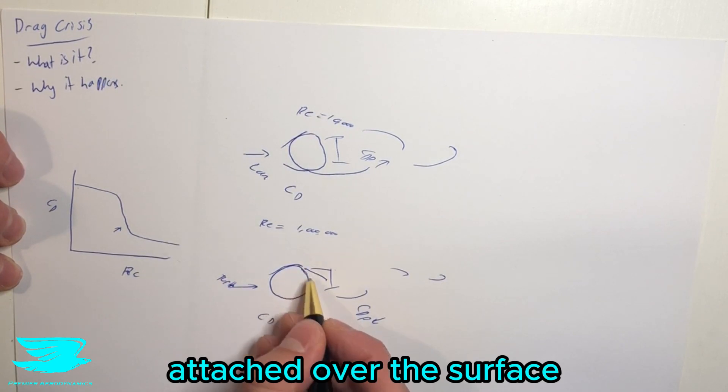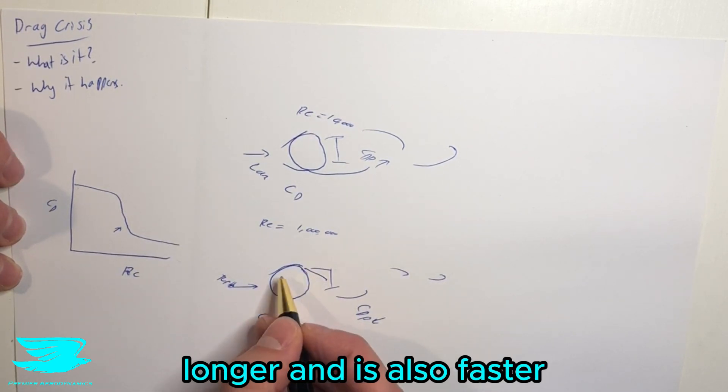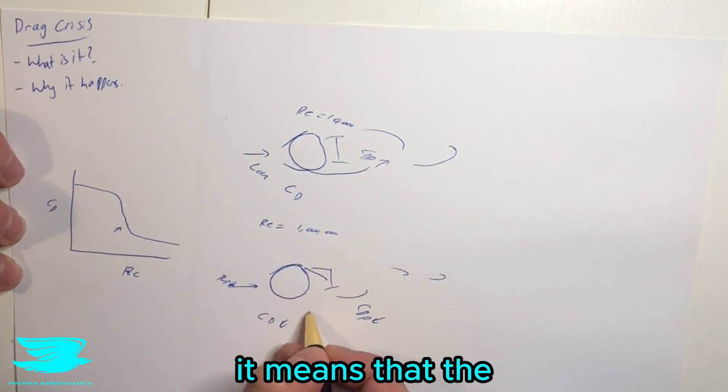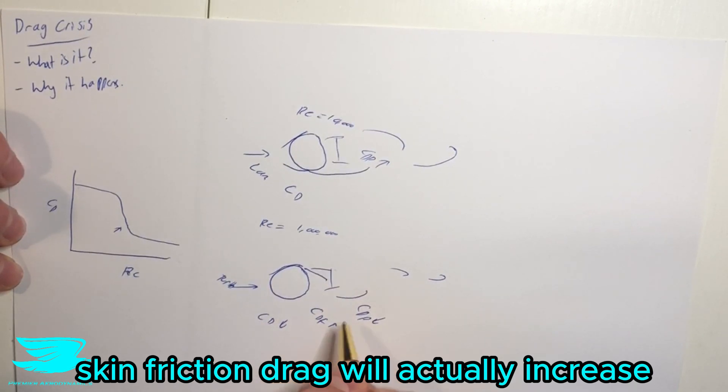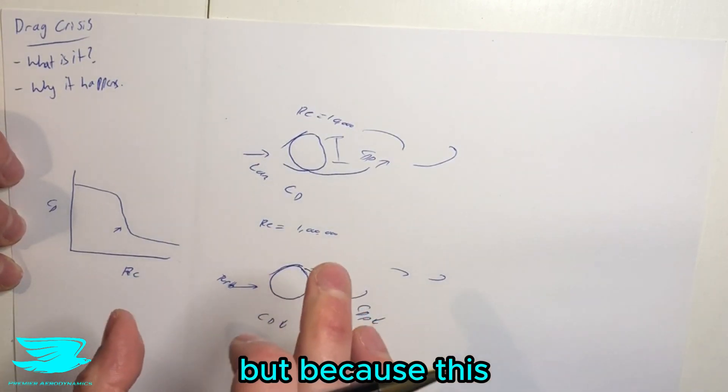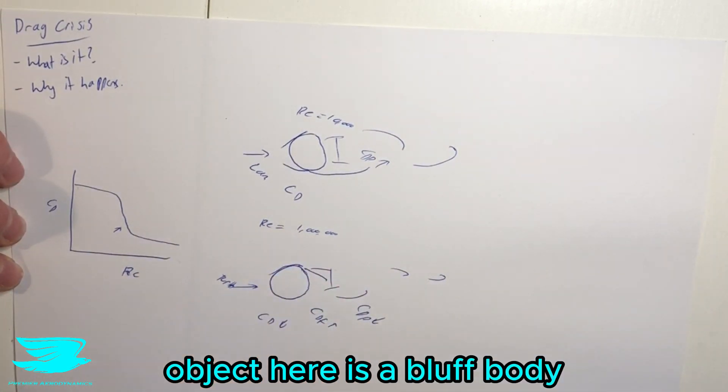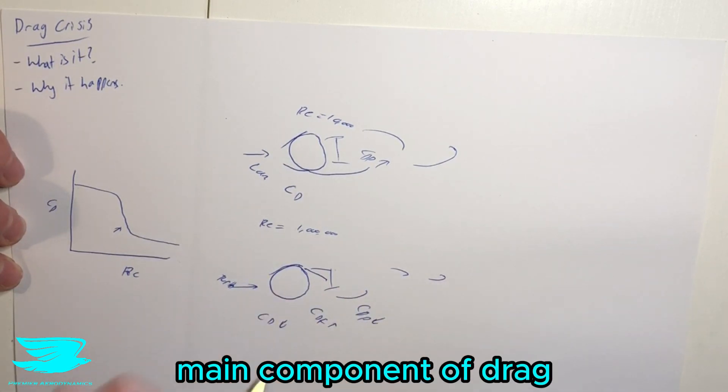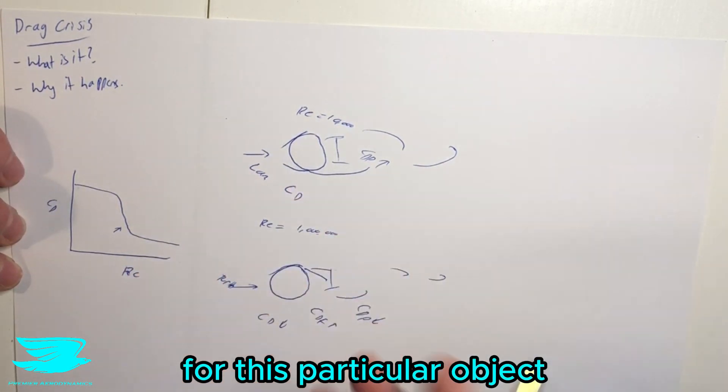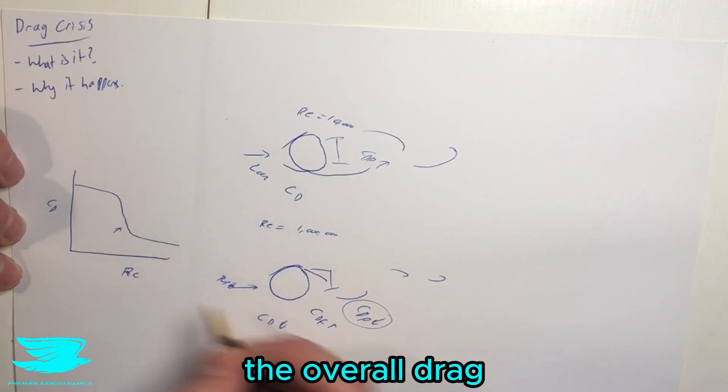Now, because the flow is attached over the surface longer and also faster, it means that the skin friction drag will actually increase. But because this object here is a bluff body, the pressure drag is the main component of drag for this particular object, which means that this dominates the overall drag.